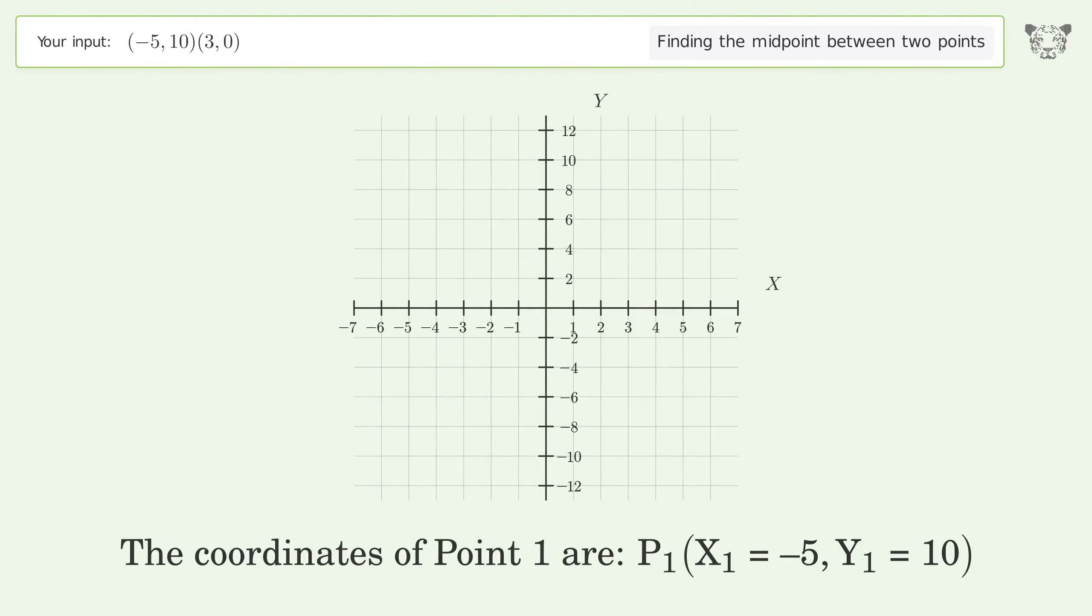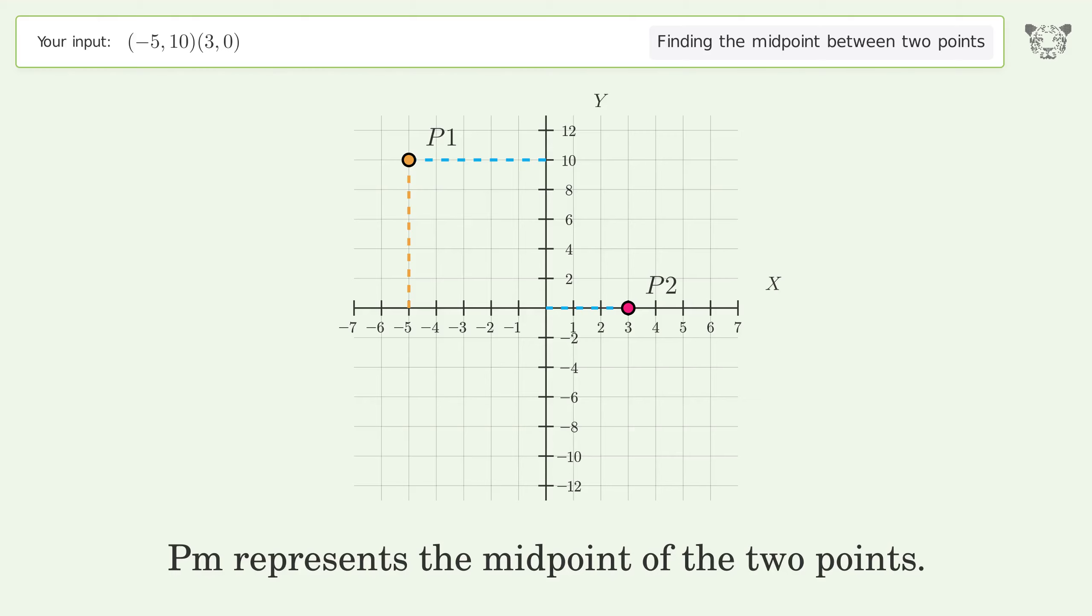The coordinates of point one are x one equals negative five, y one equals ten. The coordinates of point two are x two equals three, y two equals zero. Pm represents the midpoint of the two points.